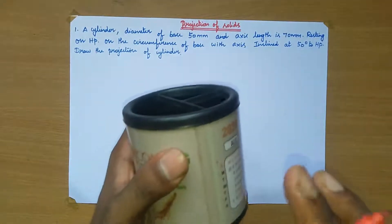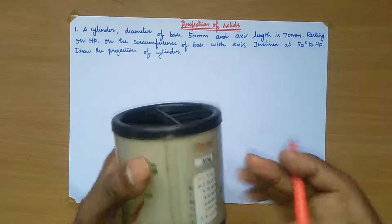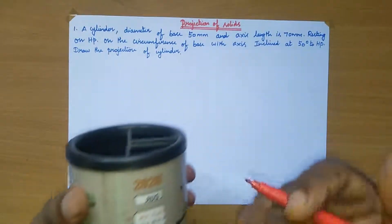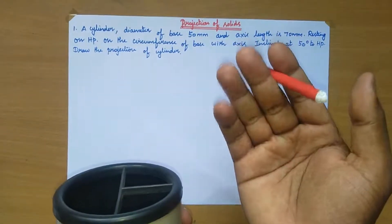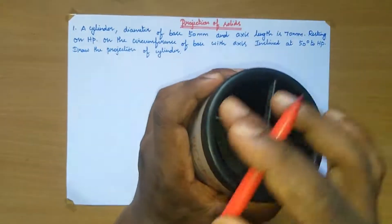If you look at the front view section, it is a rectangular image. And if you look at the top view section, it is a circular image.